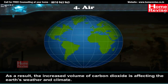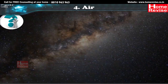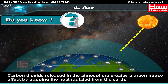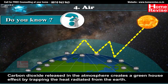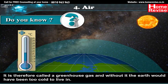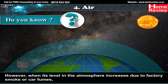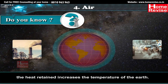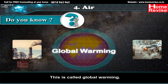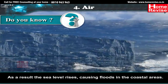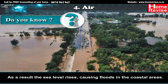Carbon dioxide released into the atmosphere creates a greenhouse effect by trapping the heat radiated from the earth. It is therefore called a greenhouse gas, and without it the earth would have been too cold to live in. However, when its level increases due to factory smoke or car fumes, the retained heat increases the temperature of the earth. This is called global warming. The rise in temperature causes snow in the coldest parts of the world to melt, and as a result, sea levels rise, causing floods in coastal areas.